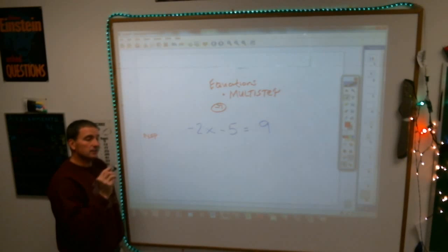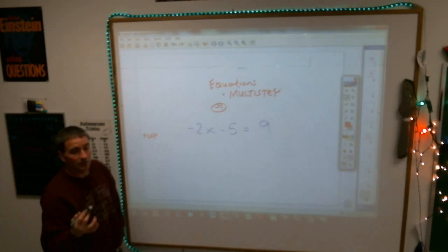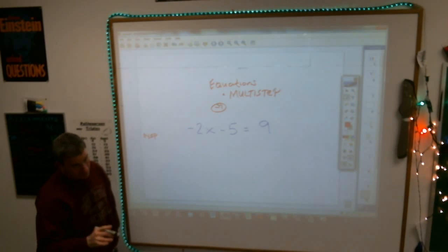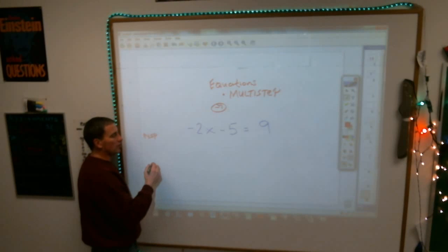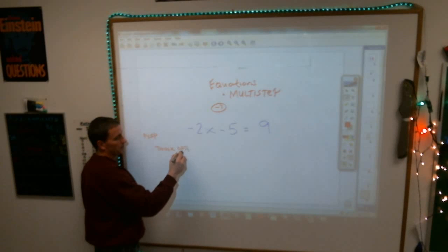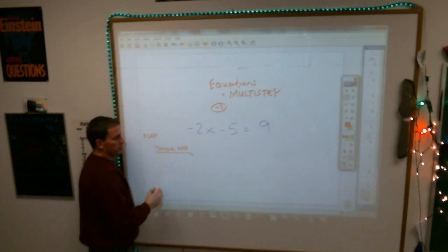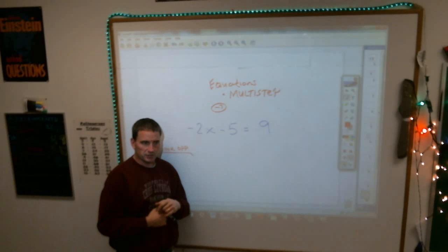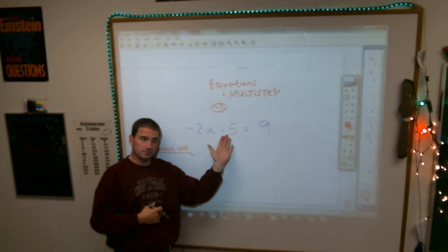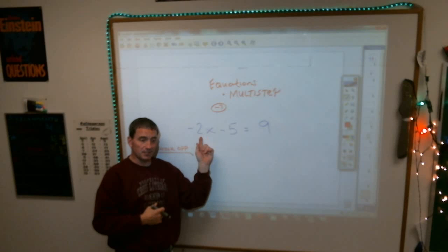What you must realize, you use the same rules that we do for equations, or simple equations. You always have to think, in order to solve, you think opposites. In other words, this equation right here is a combination equation. It has subtraction in it, and it has multiplication in it.